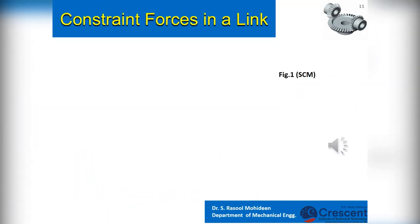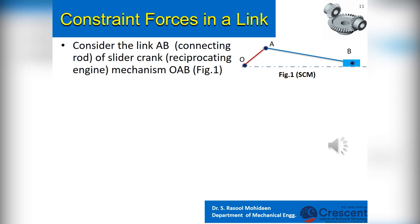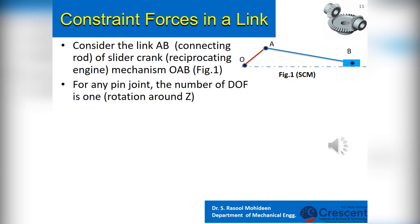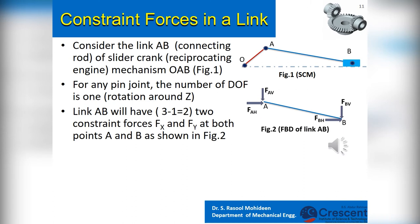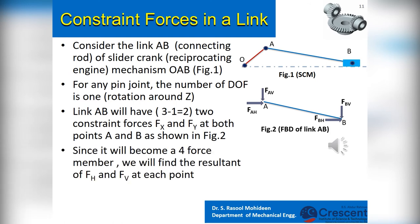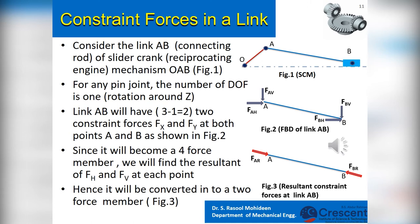Consider link AB, the connecting rod of the slider crank or reciprocating engine mechanism OAB, as shown in Figure 1. For any pin joint, the number of degrees of freedom is 1 — rotation around Z. Link AB will have two constraint forces (3 minus 1 equals 2), namely Fx and Fy at both points A and B as shown in Figure 2. Since it becomes a four-force member, we find the resultant of the horizontal and vertical forces at each point. Hence it is converted into a two-force member, as shown in Figure 3.